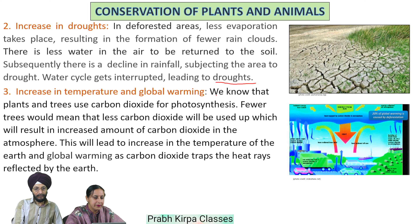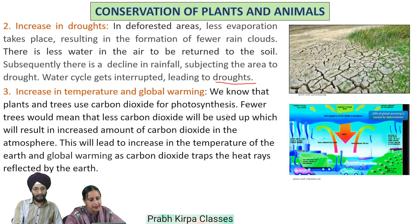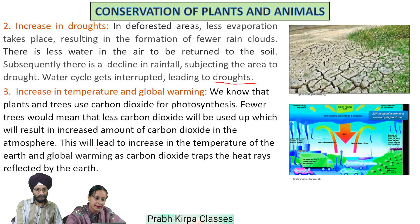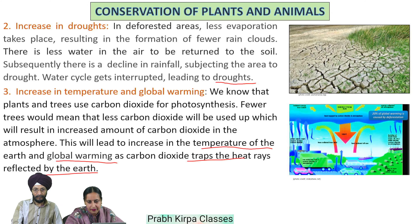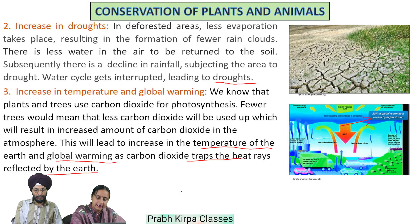Deforestation also leads to an increase in temperature and global warming. Plants and trees use carbon dioxide for photosynthesis. Permanent removal of trees means less carbon dioxide will be used up, resulting in increased amounts of carbon dioxide in the atmosphere. This leads to an increase in the temperature of the earth and global warming, as carbon dioxide traps the heat rays reflected by the earth. About 20% of global warming is caused by deforestation.